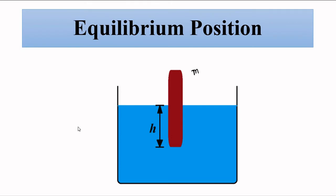Now according to the principle of flotation, when an object floats on a liquid of a certain density, the weight of the liquid displaced by the submerged portion is equal to the weight of the body. So at this equilibrium position, the weight of the cylinder is equal to the weight of the liquid displaced by the portion h which is inside the liquid.